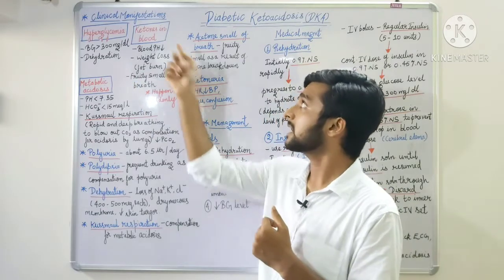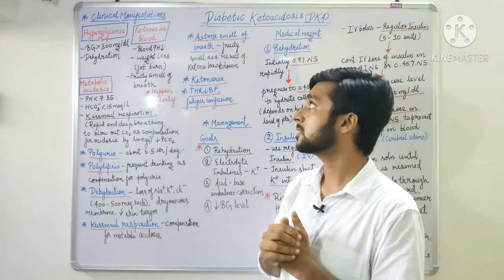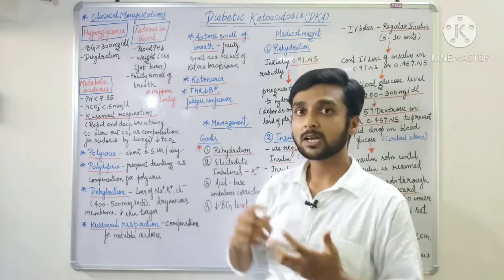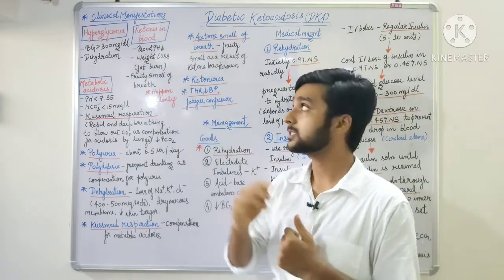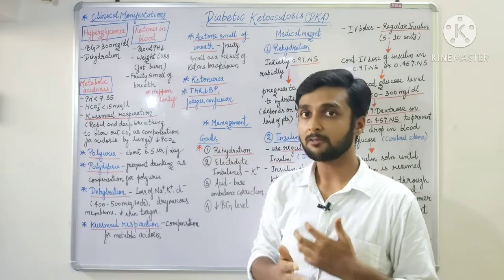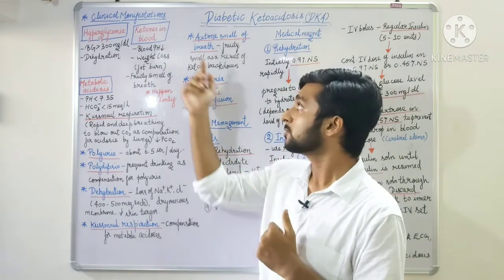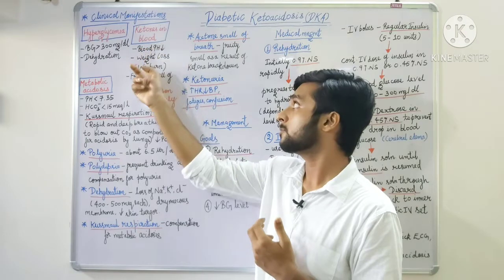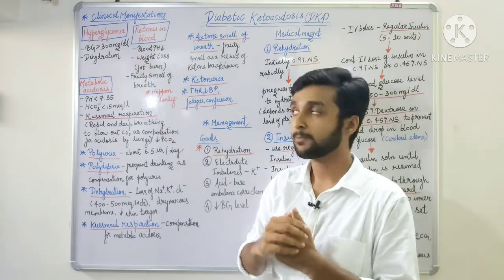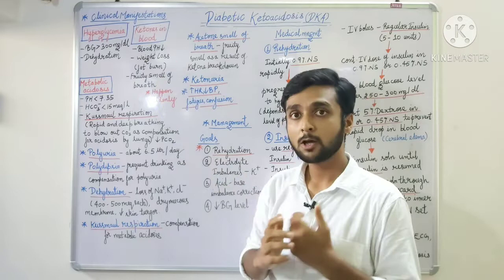Next we will see ketones in blood, or ketosis. Because ketones are acidic in nature, our blood pH will decrease and become acidic. Ketones form because of fat breakdown and fat burning, which leads to weight loss.